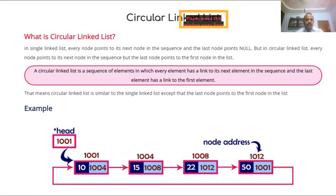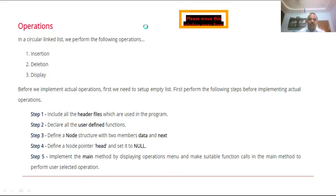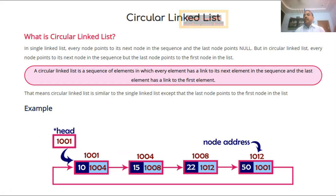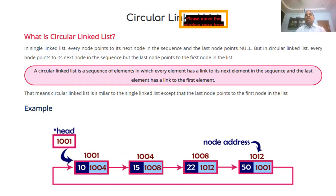What is circular linked list? In a single linked list, every node points to its next node in the sequence and the last node points to null. But in a circular linked list, every node points to its next node in the sequence, but the last node points to the first node in the list. So the last node's next equals the first node.